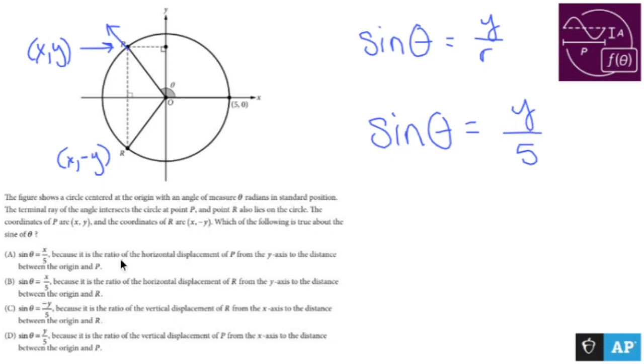And so when I look at my options here, the only option that matches that y over 5 is going to be D. Sine theta is y over 5. Because if the ratio of the - I'm pretending to read it because it's terrible, it's awful.